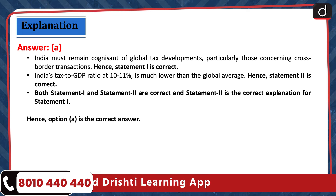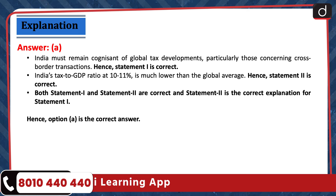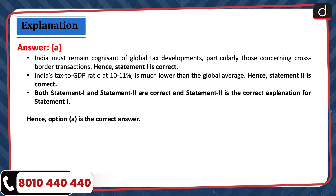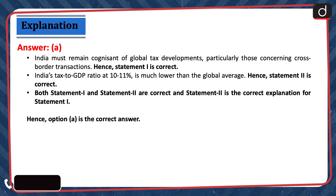India must remain cognizant of global tax developments, particularly those concerning cross-border transactions. Hence, statement 1 is correct. India's tax-to-GDP ratio at 10-11% is much lower than the global average. Hence, statement 2 is correct. So, both statements 1 and 2 are correct and statement 2 is the correct explanation for statement 1. Hence, option A is the correct answer.